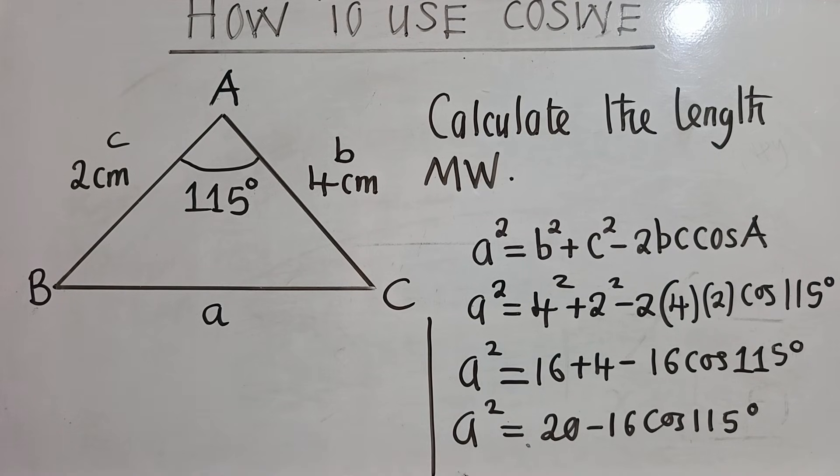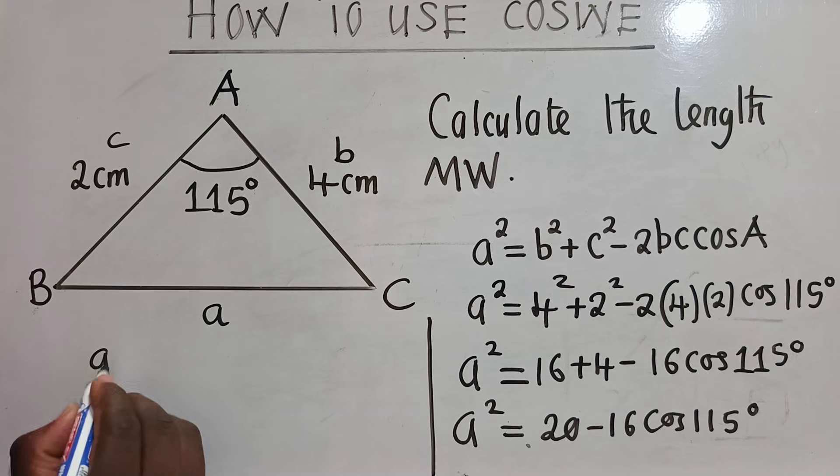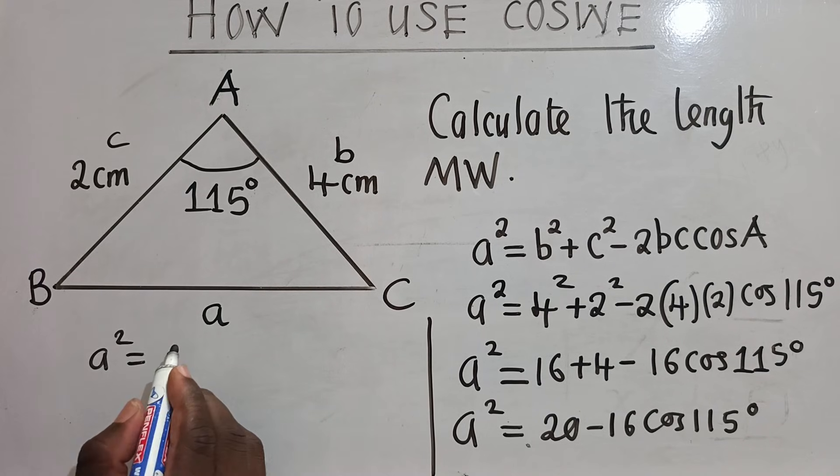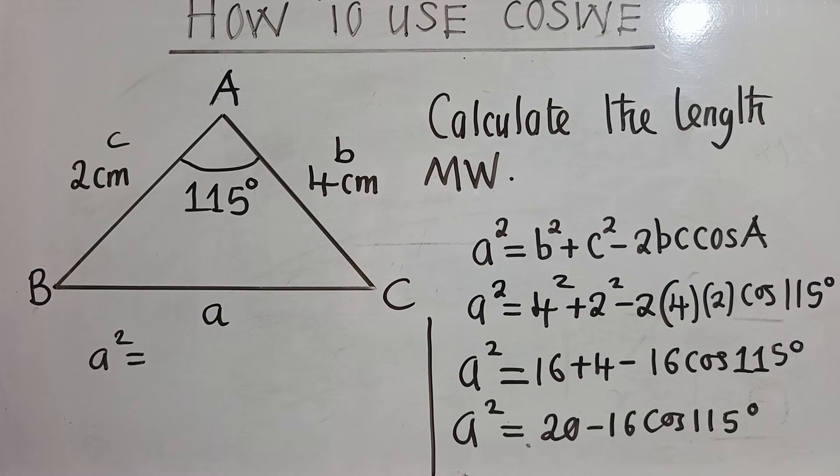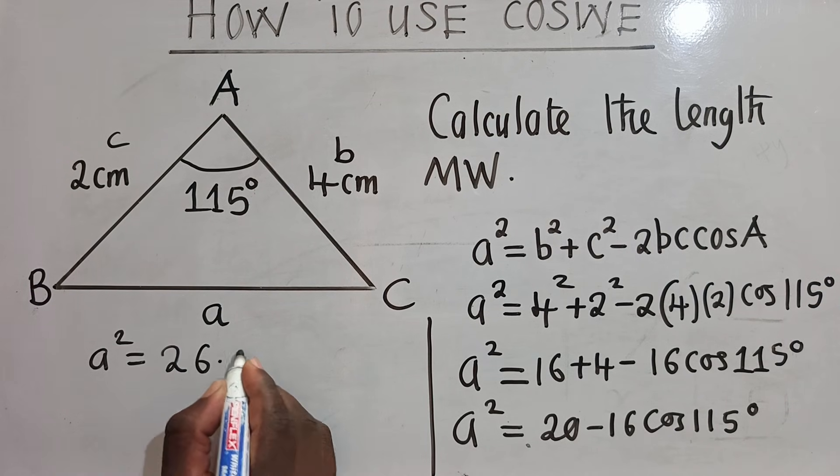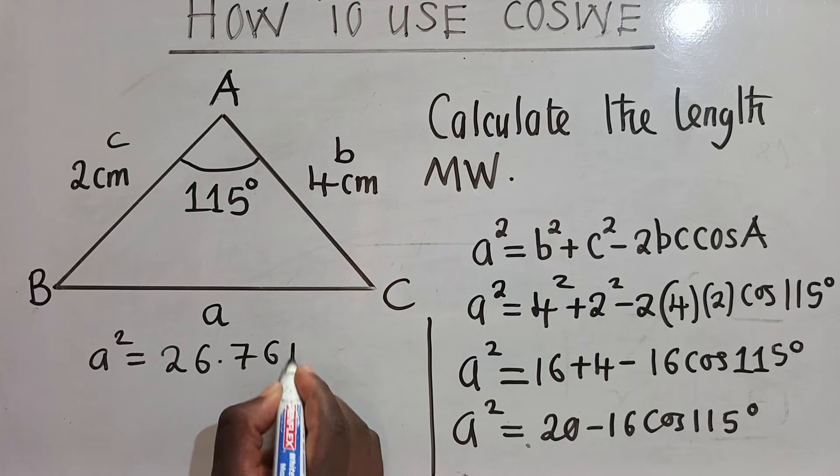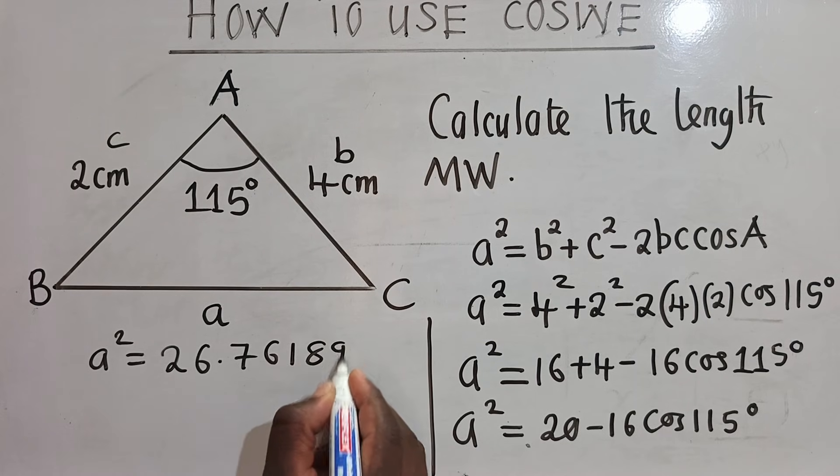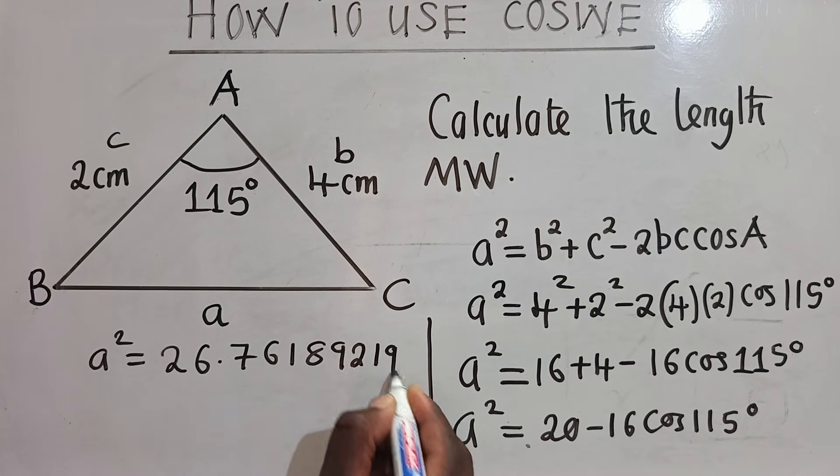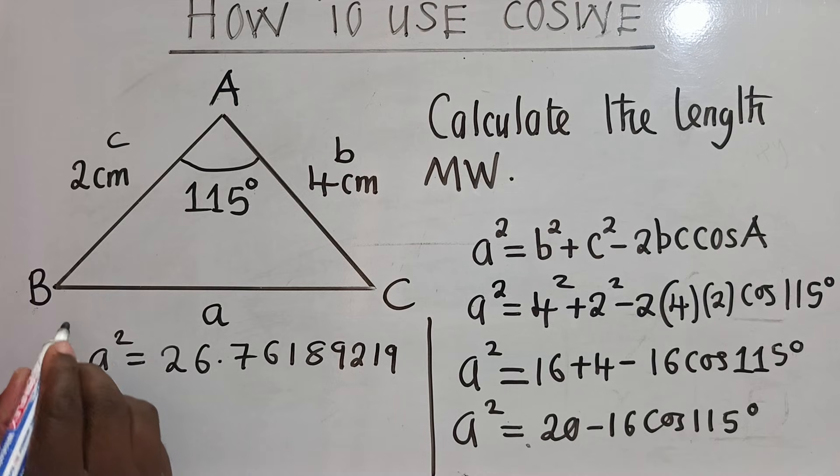And from this, we can say a² is equal to, you now punch on your calculator. Just punch on your calculator. That is 20 - 16 cos 115 degrees. This is giving us 26.76189219. But because of the power 2 here, you put the square root.